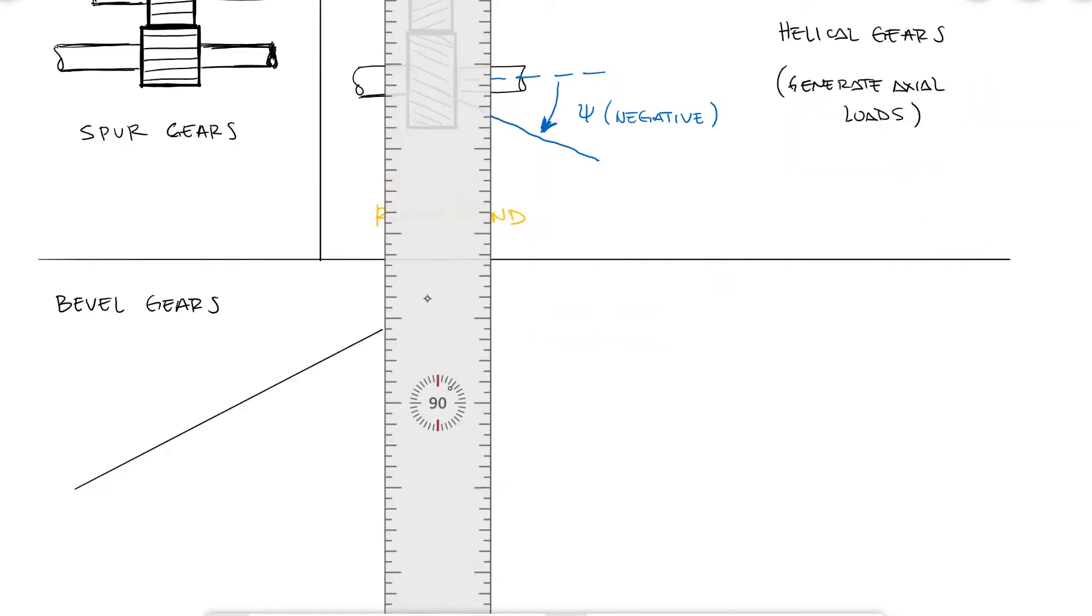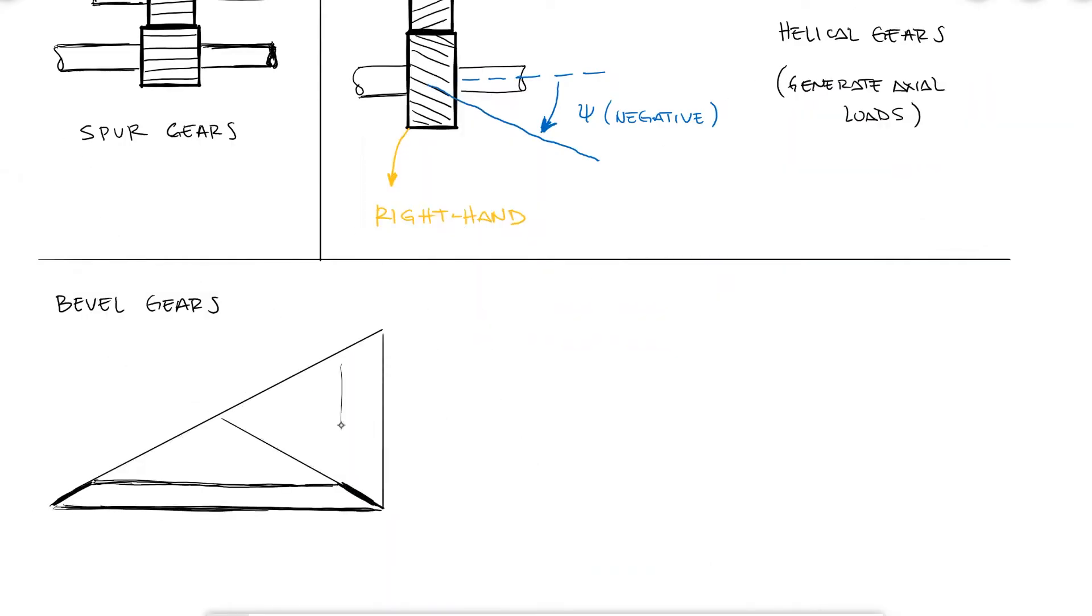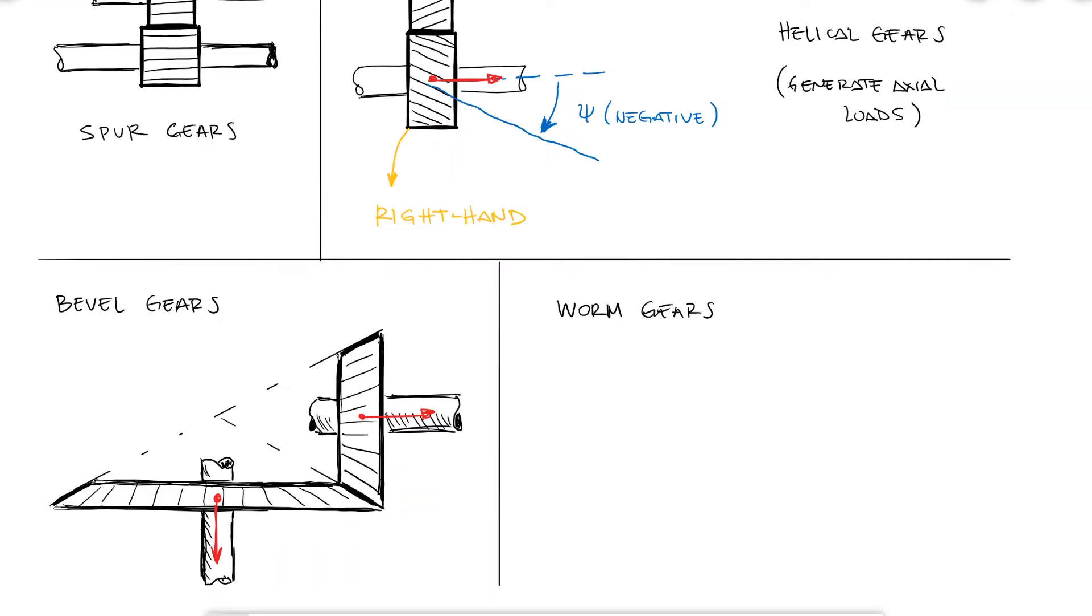Bevel gears have a conical shape component to them. They are usually used to transmit power between shafts that are not parallel to each other, and in most cases, that are perpendicular to each other. Just like helical gears, there will be an axial load component that affects the shaft in its axial direction. Finally, the worm gears share many properties of power screws, but the main difference is that power screws usually rotate at low speeds and carry high torques, while worm gear configurations rotate at high speeds to transmit high power despite lower torques. And again, just like helical and bevel, worm gears also cause and transmit axial loads.